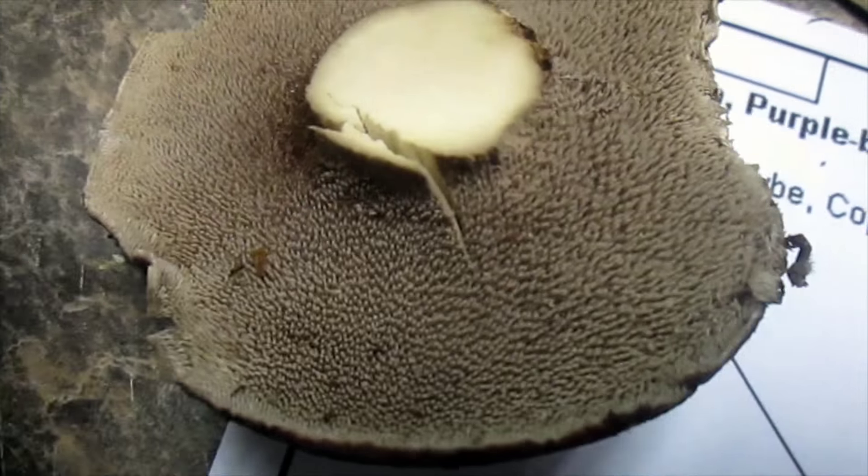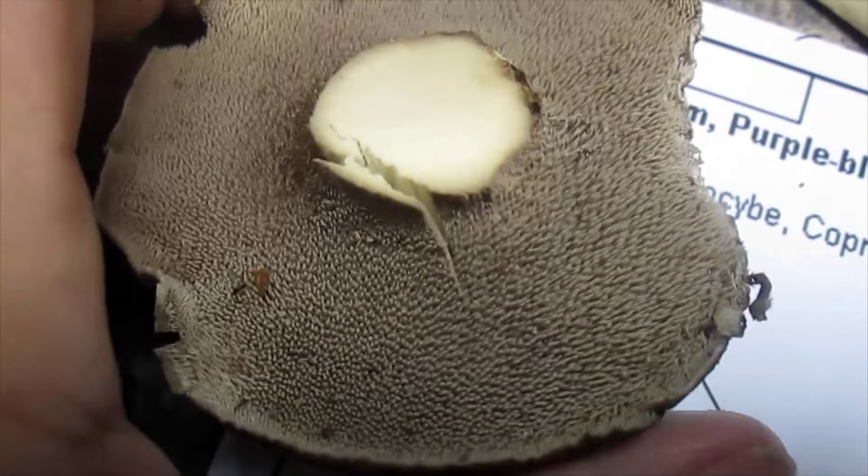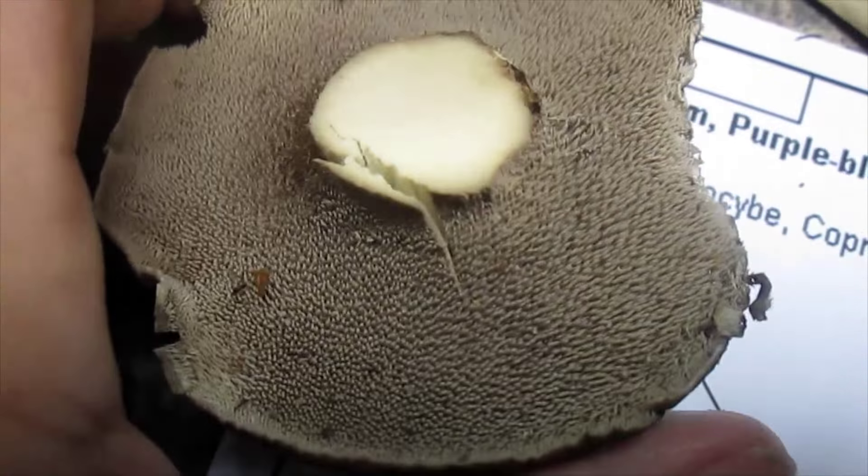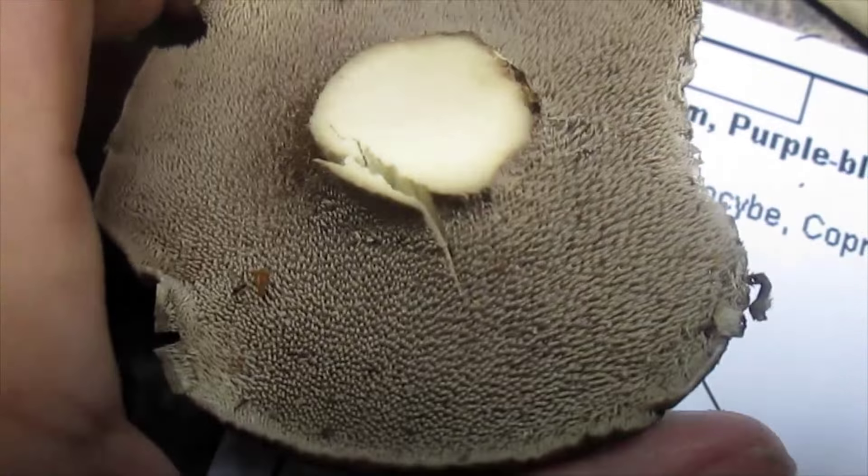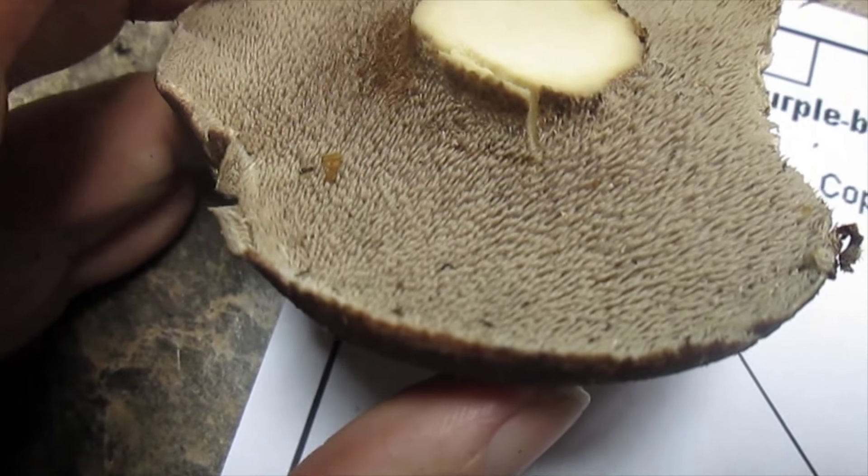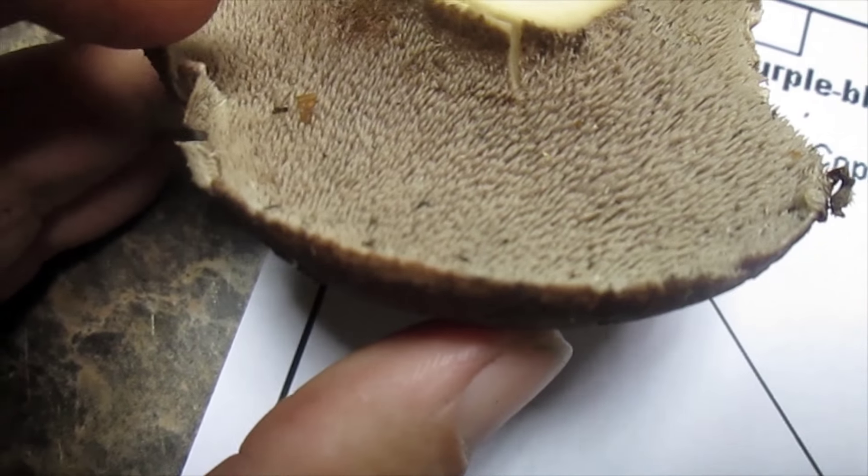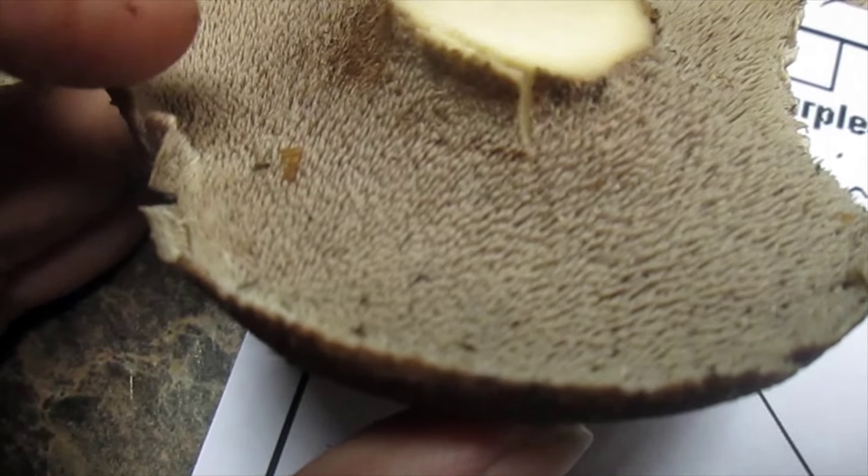I'm taking a mushroom here that I kind of know what it is, but I'm pretending I don't right now so we can do the spore print. So what we're going to do is cut it at the base, lay it on here, and then we're going to cover it over with something to increase the humidity and encourage the spores to drop.